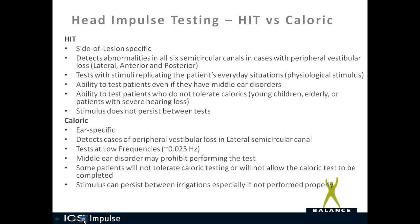Let's talk about the difference between head impulse testing and caloric testing. Head impulse testing is a site-of-lesion specific test, so it tells you whether it's the left lateral canal, the right lateral canal, the left anterior canal, the right anterior canal, etc. Caloric is ear specific. The head impulse test detects abnormalities in all six semicircular canals, including the lateral, anterior, and posterior canals independently, whereas caloric detects only the lateral semicircular canal.